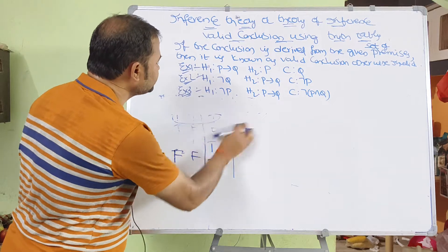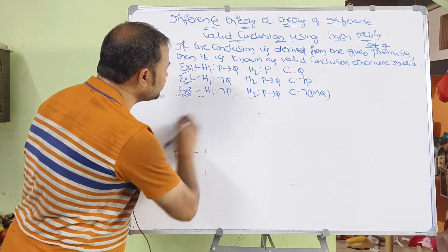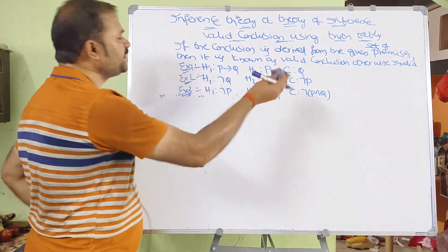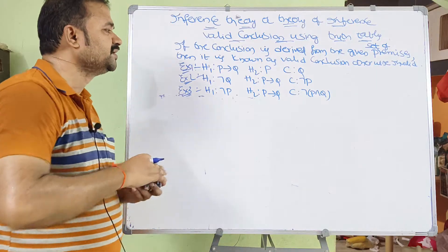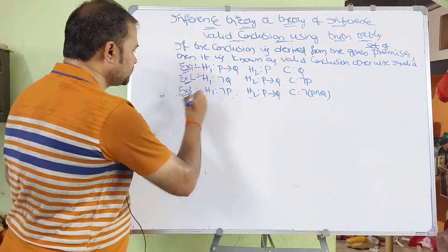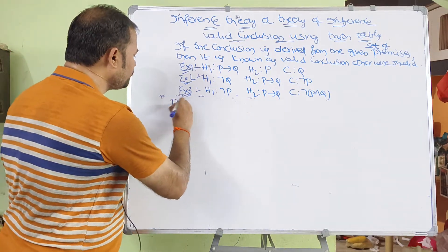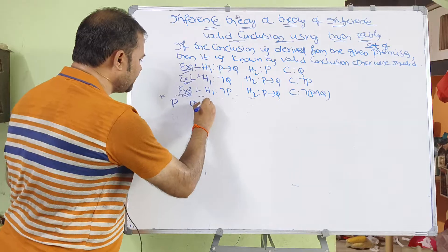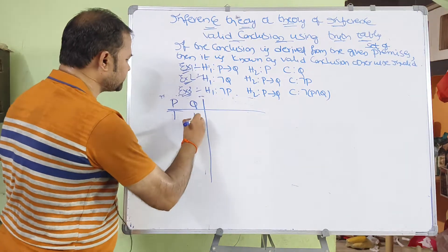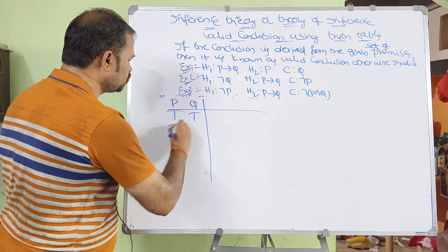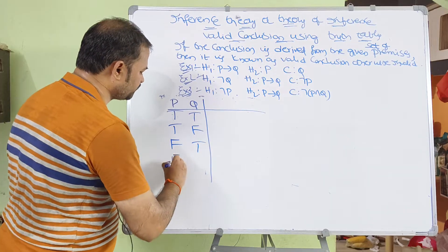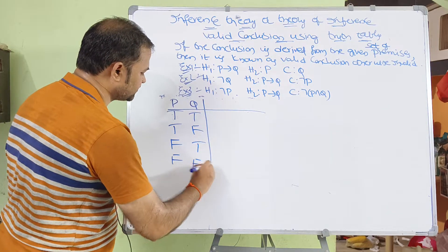Now let us see the second example. H1 is negation Q, H2 is P implies Q, and the conclusion is negation P. We again have two variables, giving four combinations: true-true, true-false, false-true, and false-false.